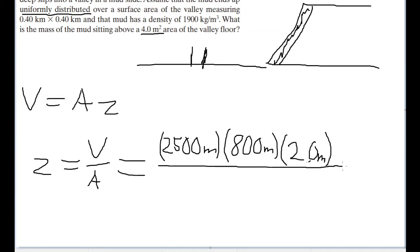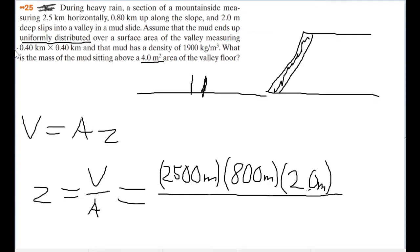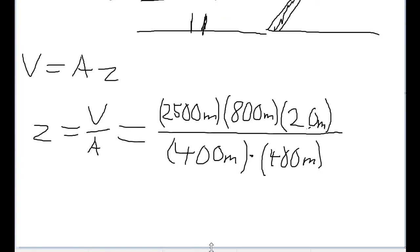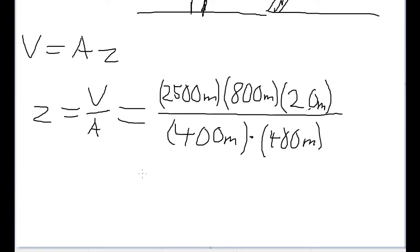And as for the area, the area over which all of the mud is distributed is 0.4 kilometers by 0.4 kilometers, or in other words, 400 meters by 400 meters. And plugging all this into our calculator, the answer you'd get for the thickness of the mud area overall is going to be about 25 meters.